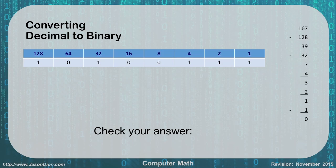So to check our answer, we're going to just add up all the columns we put a 1 in. And so in this case, we get 128 plus 32 plus 4 plus 2 plus 1, which equals 167. Since 167 was in both places, that worked and we got the correct answer.